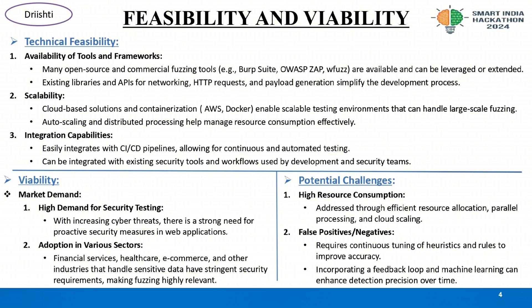Scalability: cloud-based solutions and containerization like AWS and Docker enable scalable testing environments that can handle large-scale fuzzing. Auto-scaling and distributed processing help manage resource consumption effectively. Integration capabilities: easily integrates with CI/CD pipelines, allowing for continuous and automated testing, and can be integrated with existing security tools and workflows used by development and security teams.